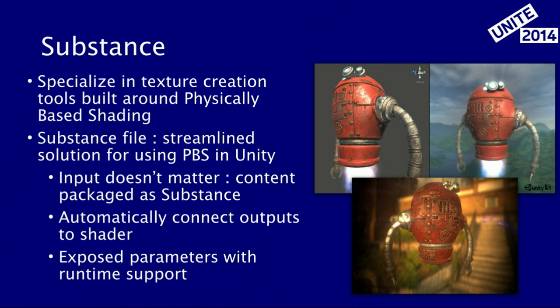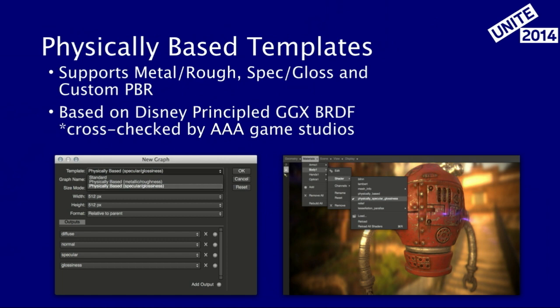The Substance material comes in describing all of the physically-based attributes of the surface, and it auto-connects to the standard shader — everything is already set up for you. You also have the added benefit of exposed parameters that you can change dynamically in the editor and also through the runtime. When looking at tools for creating this content, we have Substance Designer and Substance Painter. Substance Designer is more geared towards technical art and pipeline — think of it more like a hub for bringing all your content together. Substance Painter is a very artist-friendly tool: 3D painting, layer-based system, very easy to grasp.